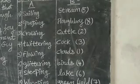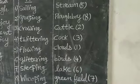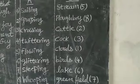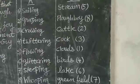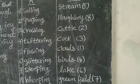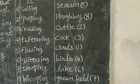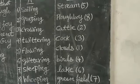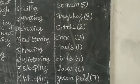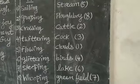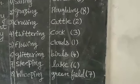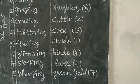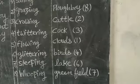The second one is 'grazing.' For grazing, the answer is 'cattle' — I have put number 2 next to it, so grazing cattle. The third one is 'crowing.' The answer for crowing is 'cock' — I have put number 3. The fourth one is 'twittering.' Twittering means birds make a chirping sound. So the answer for twittering is 'birds' — I have put number 4 on the right side.